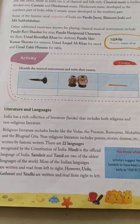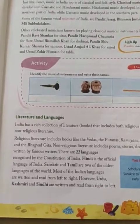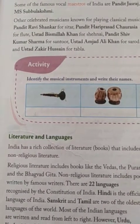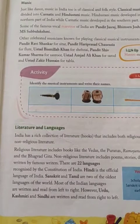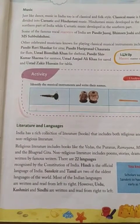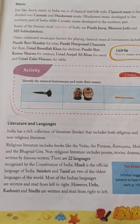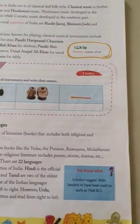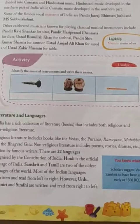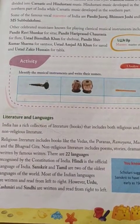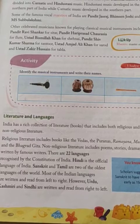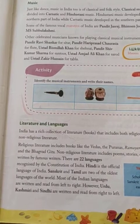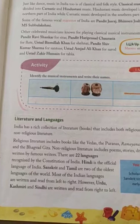Here is an activity — the instruments are given and we have to find out the name of each instrument. The first one is Shehnai, the second one is Tabla, and the third one is Flute. Now, the famous person associated with Shehnai is Ustad Bismillah Khan.